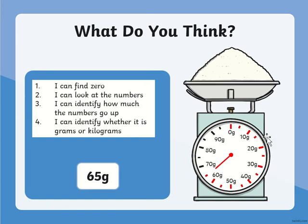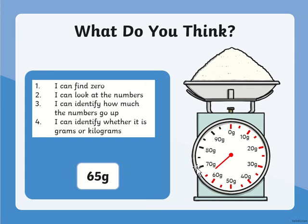So it counts: 5, 10, 15, 20, 25, 30, 35, 40, 45, 50, 55, 60, 65, 70, 75, 80, 85, 90, 95. The scale is in grams — the little 'g' represents grams. We can see the line is already pointing to the middle of 60 and 70 grams, which means it is reading 65 grams.